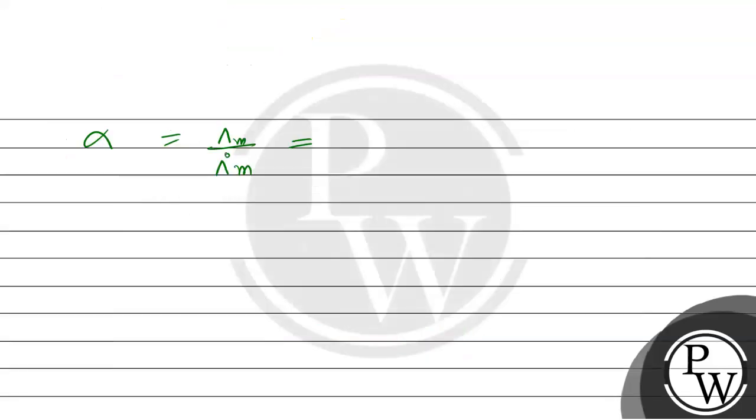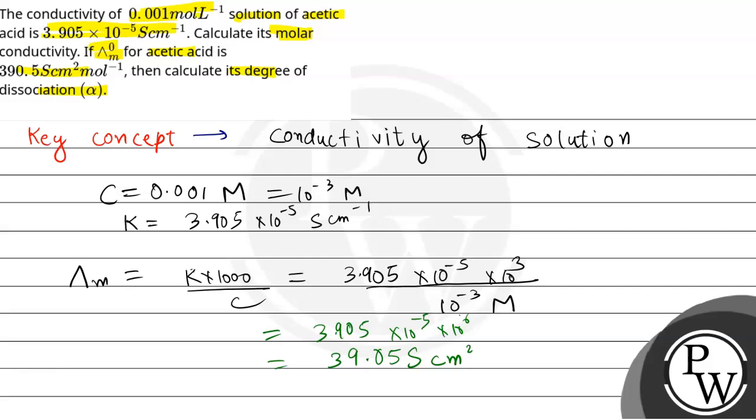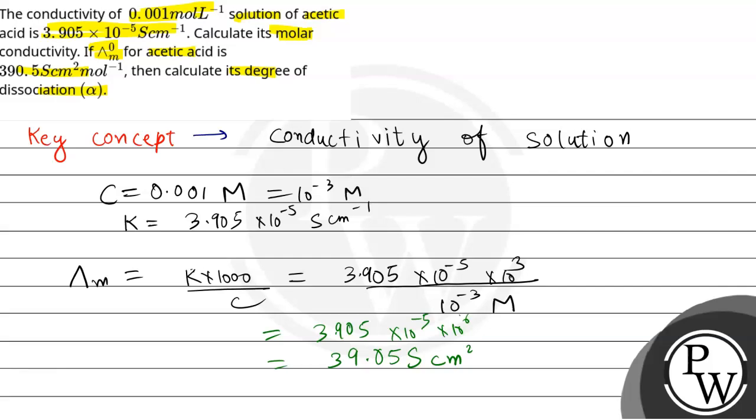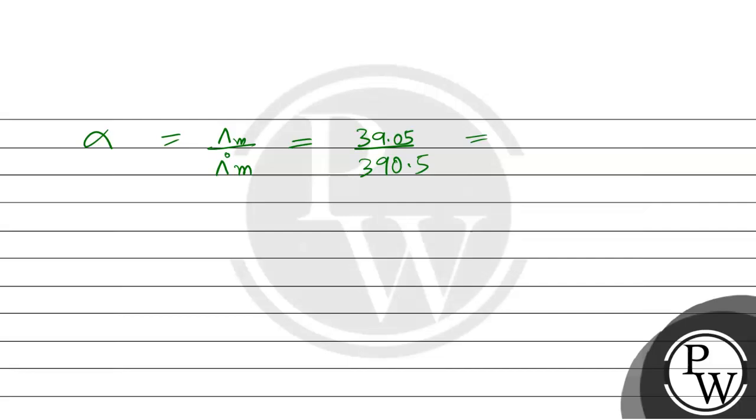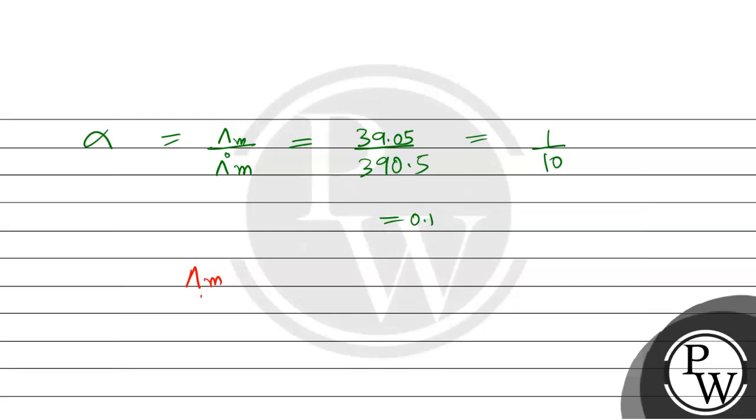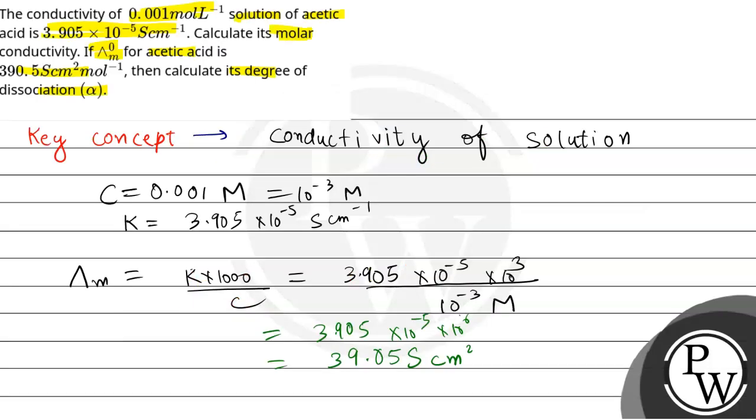If we put the values, we will get 39.05 divided by 390.5. This is equal to simply 1 upon 10, that will be equal to 0.1. So alpha value is 0.1. If percentage is asked, multiply by 100. So our final answer: we have to tell λm, that is molar conductivity, which is 39.05 S cm² mol⁻¹, and alpha is 0.1 or 10%. So this will be our final answer. Hope you understood this well, best of luck.